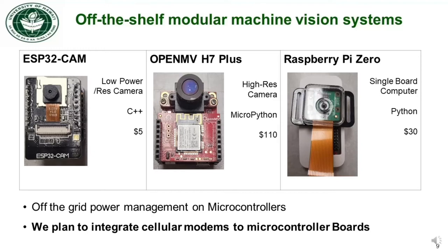We also have power management components that cost around $30, and a cellular modem that costs about $40. It is important to have power management on microcontrollers since traps are spread around the island. We have designed a system to charge a LiPo battery with a photovoltaic panel for energy sustainability of the board.